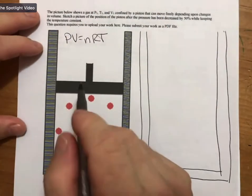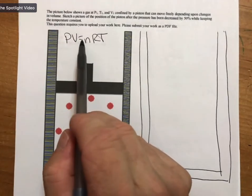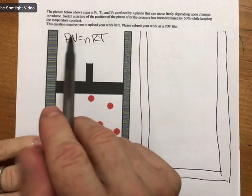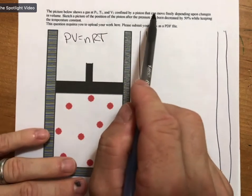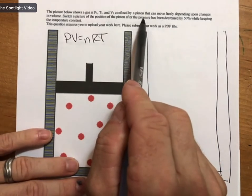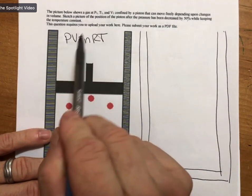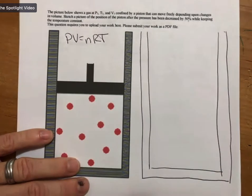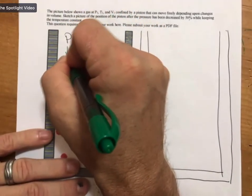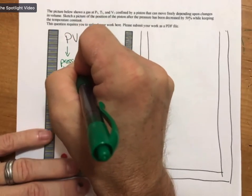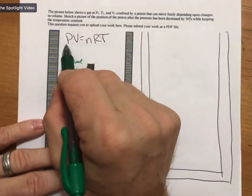And for the ideal gas law, if we have, well, there's a couple of different ways to do that, but let's use, let's try and use the ideal gas law since that's the one that's on this week's homework. It says the pressure has been decreased by 50% while keeping the temperature constant. So pressure has been decreased while keeping everything else constant. So this is the ideal gas law.